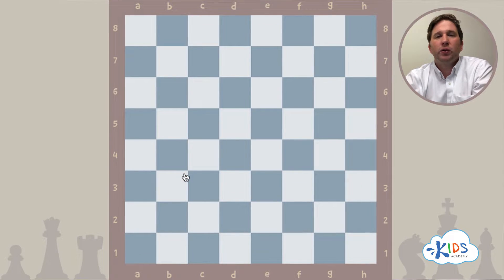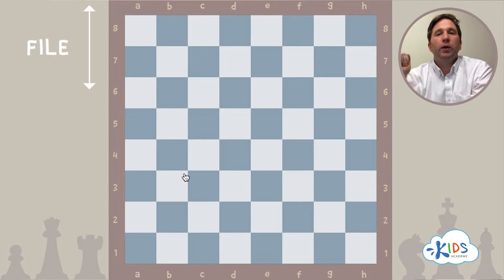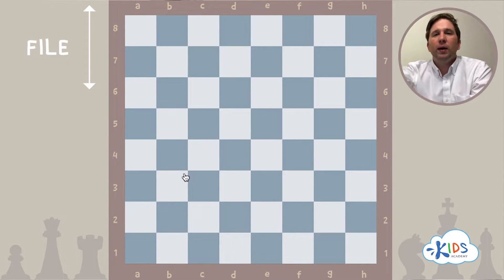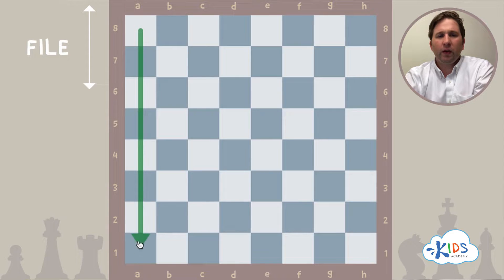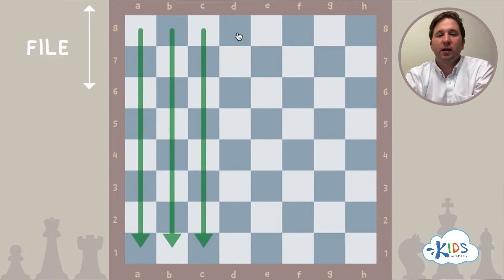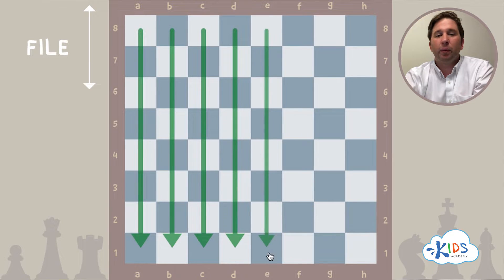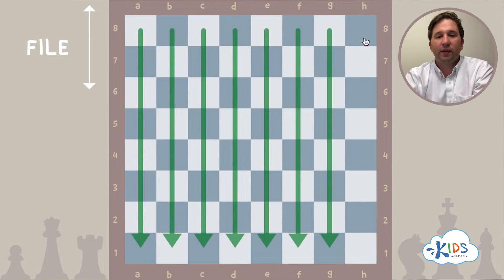The second vocabulary word is file. File is the word we use instead of columns, or up and down. We can say moving along the file. If you put them together we have ranks and we have files. There are also eight files in chess going up and down the board.